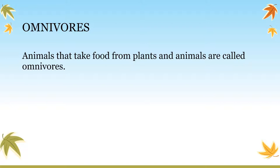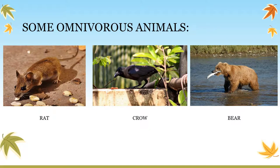Those animals which depend on both plants and animals for their food are called omnivores. Let us see some examples of omnivore animals. Bear, rat, and crow are omnivores. As you can see in this picture, a bear is catching a fish. Bear generally eats fruits, grass, and other plant products.